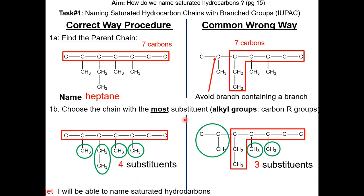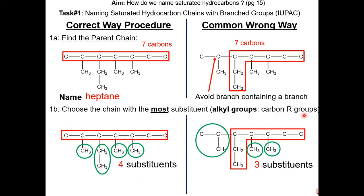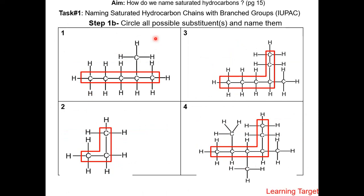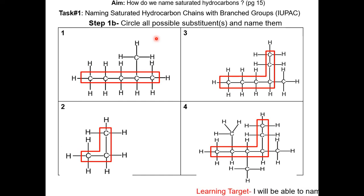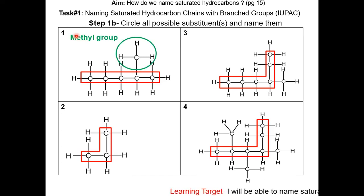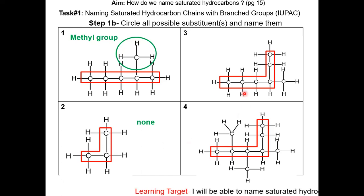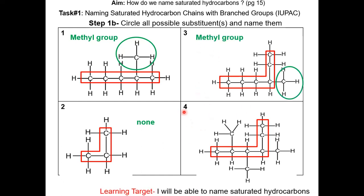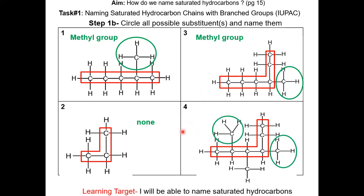Carbon substituents are also called alkyl groups, which are carbon R groups. On page 16, take a moment to circle all possible substituents and name them. For question 1, there is a methyl group. For question 2, there is no substituent. For question 3, there is a methyl group. And for question 4, there are 3 methyl groups.